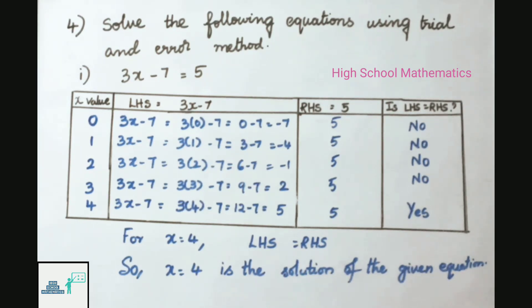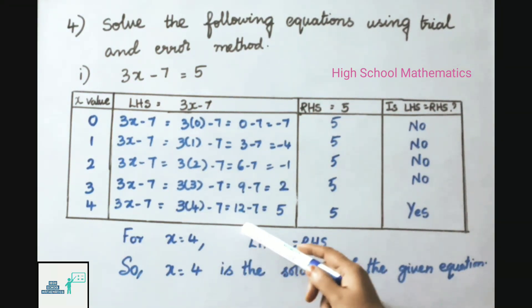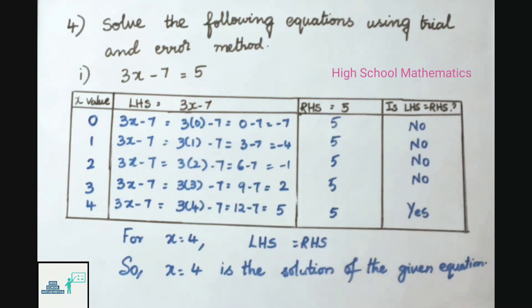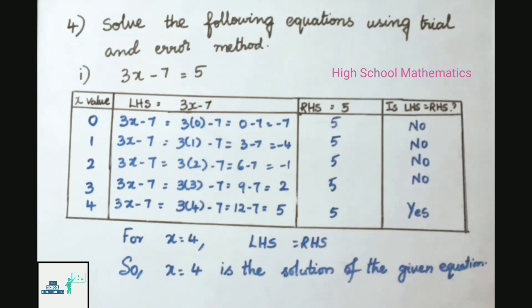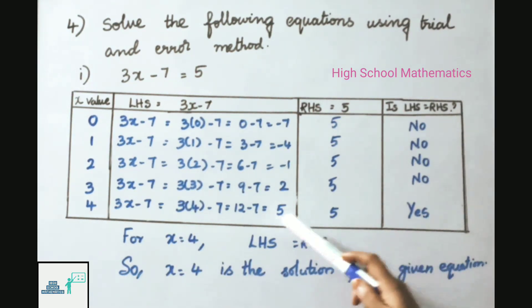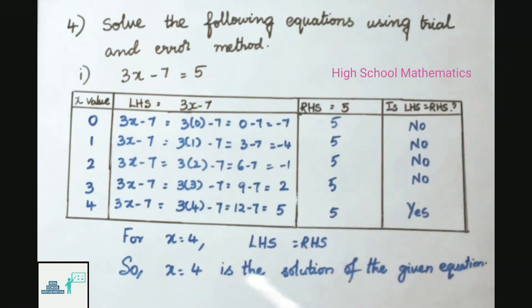For x = 4: LHS = 3(4) − 7 = 12 − 7 = 5; RHS = 5. Now LHS equals RHS. So x = 4 is the solution of the given equation.